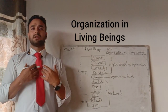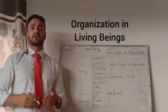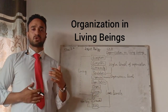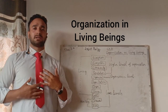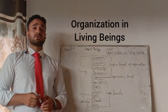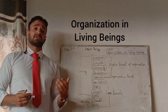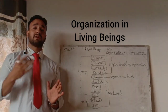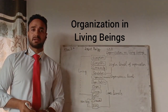Similarly, human beings can be compared with the machines as well. We are also made up of different parts, like hands, stomach, eyes, ear — different parts. So organization in living beings: in this chapter we will study how living beings are organized in different ways, and how many different levels of organization are there.